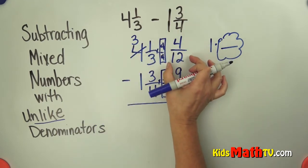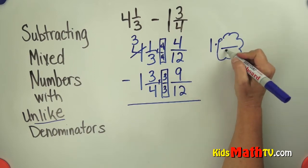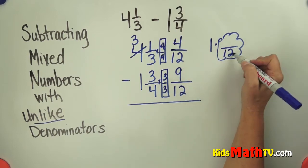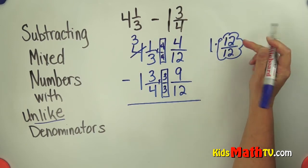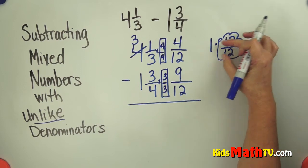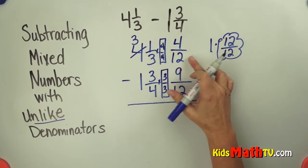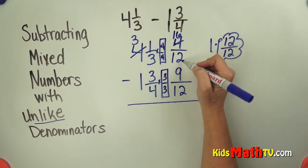So I need to regroup 1, this 1 with this 4 twelfths. Well 1 I can rename it as twelfths because my denominators are twelfths. So how many twelfths is 1? Well it's 12 twelfths. 1 is 12 twelfths. So this 12 twelfths or this 1 that I borrowed I'm going to add to this 4 twelfths. 4 twelfths and 12 twelfths is 16 twelfths.